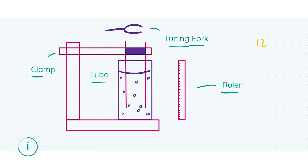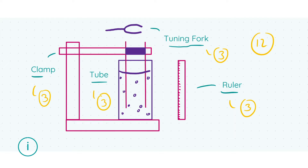The important buzz terms to include are the tube and the tuning fork, as well as a means of measuring and changing the length of the resonance tube — done here using a clamping system and a ruler. Including these terms gets you a total of 12 marks: three marks each for the ruler, tuning fork, method of changing length, and the tube.